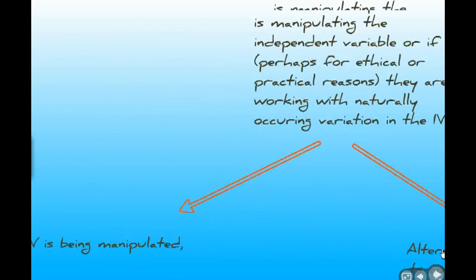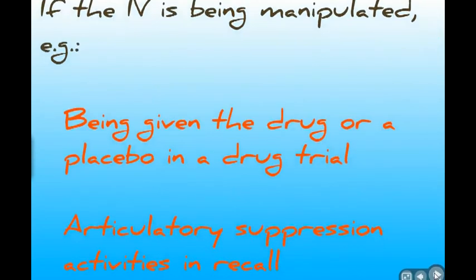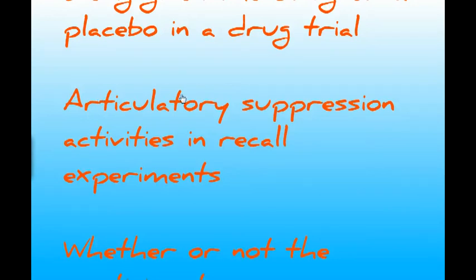If we're going to manipulate the IV, it could be something like a drug trial, where we give some participants the drug and some the placebo and hope to observe differences in outcomes. Alternatively, with articulatory suppression activities, half the participants count backwards in threes from a large number after seeing stimulus material, while the other half simply wait and then recall. The articulatory suppression is supposed to influence the amount of recall.